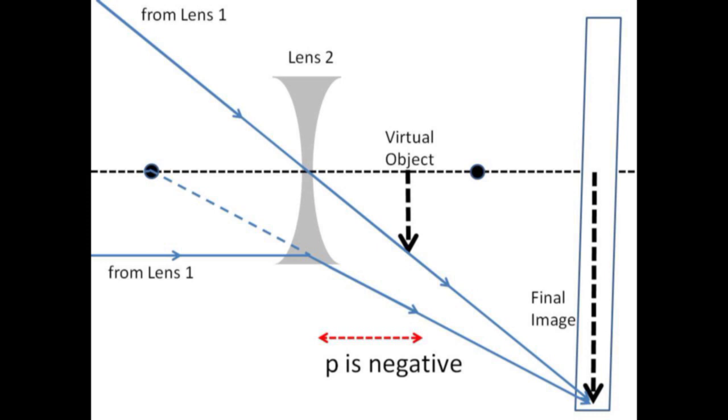It proceeds undeflected and eventually intersects the other ray to form a real, final image. By using this combination of two lenses, it is possible to form a real image for observation.